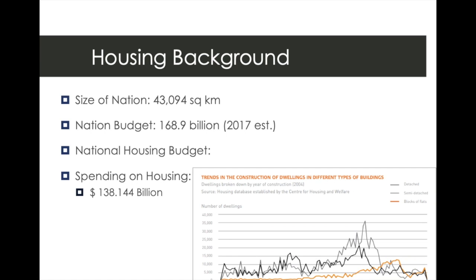The background of housing: the size of the nation is just about 43,000 square kilometers. The national budget is just under $170 billion. Spending on housing among the people is just about $138.144 billion, and you can see the rise and fall in that in the provided graph.